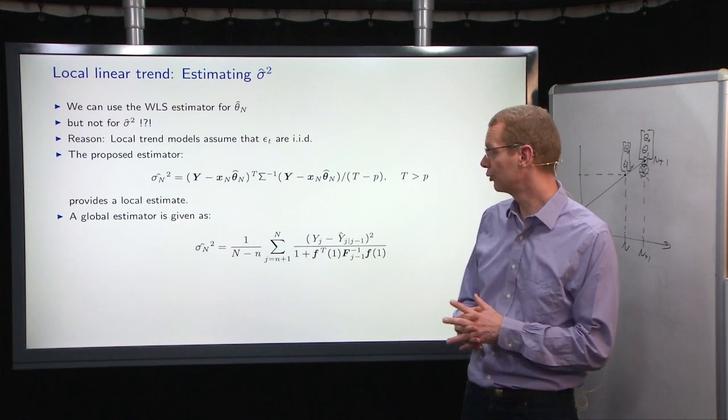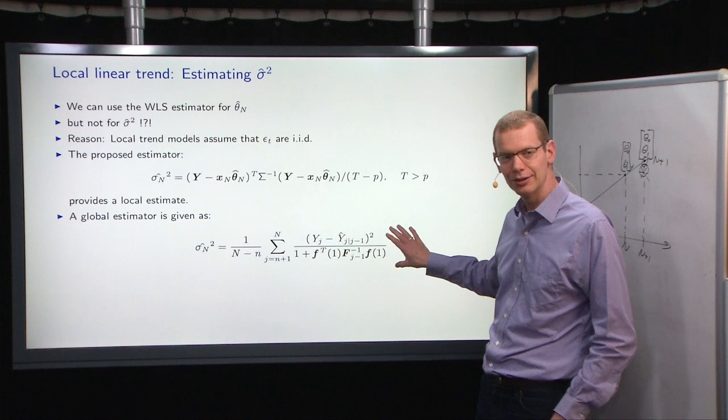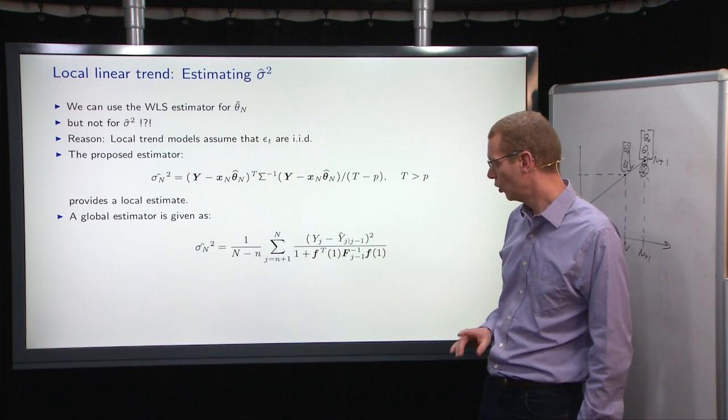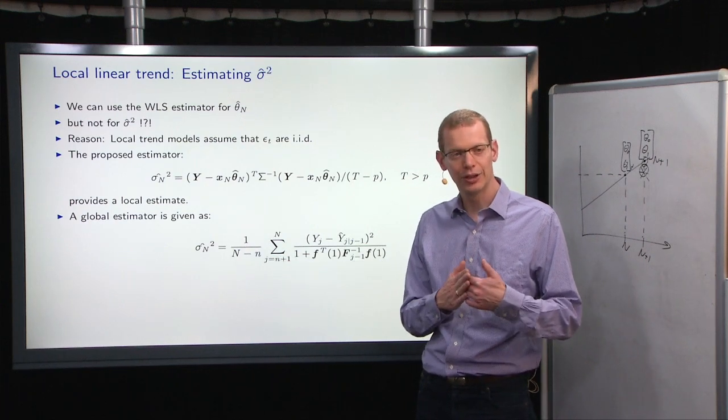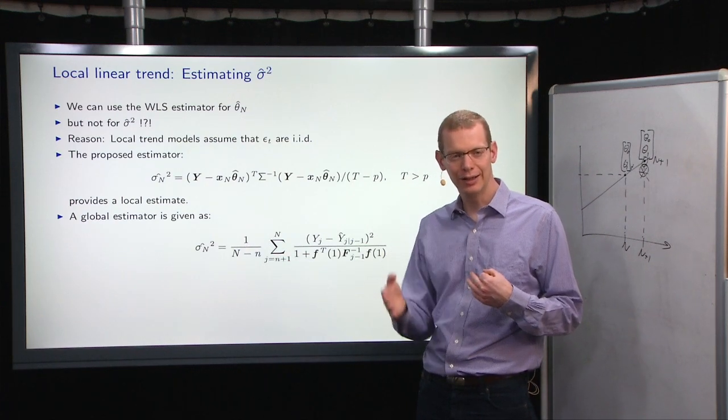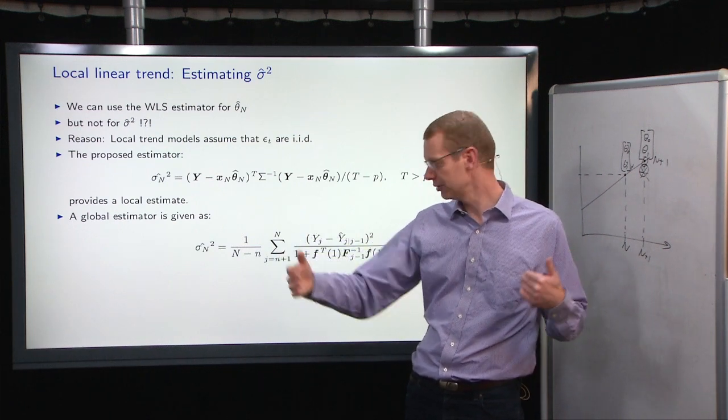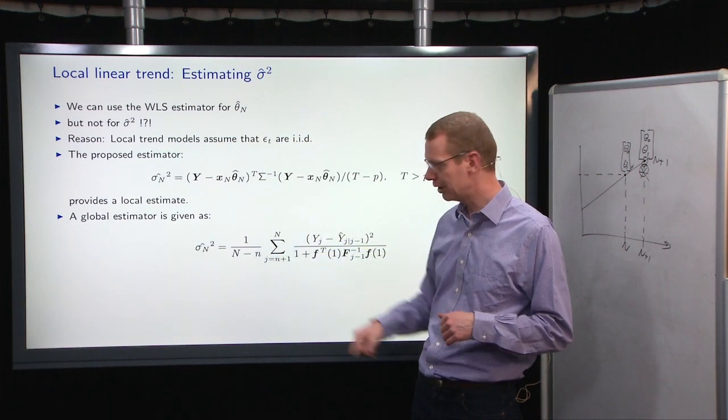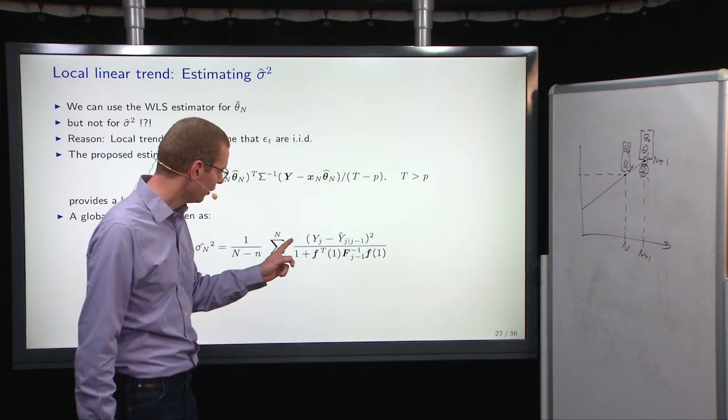So what I showed you earlier on was this particular notation here, where we use T to correct for the fact that we don't have n observations, but we have effective T observations. This is a local estimate because it's only based on the theta n here. So it's an estimate of the uncertainty when you're at that particular point in time. An alternative is to do a global estimator. This expression is a little bit more complicated as such. What we do is that we start off, as I said before, we should don't make an estimate of the parameters until we need to have a few observations. So we have a burn in period, lowercase n here, where we do not care about this.